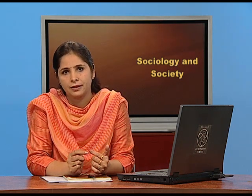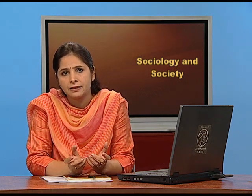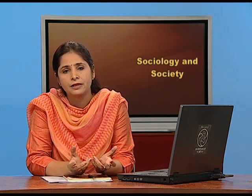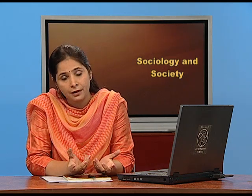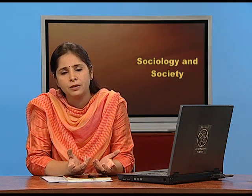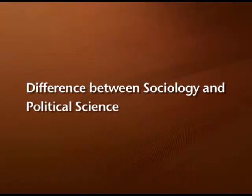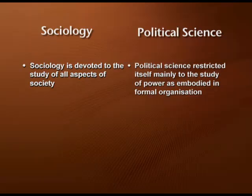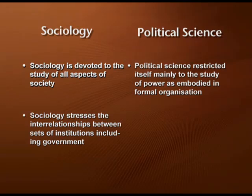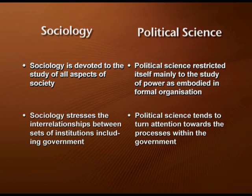This is what sociologists are interested in. Nowadays, sociologists and political scientists have common interests. When it comes to elections, they want to study voting patterns, the behaviour of the electorate, and how the results of opinion polls affect the results of any election. There is a close connection between these two disciplines. The major difference is that Sociology is devoted to the study of all aspects of society, whereas Political Science is restricted to the study of power as embodied in formal organizations. Sociology stresses the interrelationship between sets of institutions including government, but Political Science tends to focus on processes within the government.